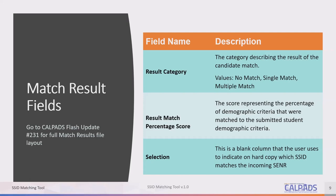The selection field is a blank column for users to indicate whether or not they are selecting that candidate. You can put any value in this field when doing manual matching — it may be simplest to put the SSID of the matching student in that field, or use it as a yes/no indicator. That field is there for future enhancements in which vendors will allow matching within local information systems. Right now, you can expect to do manual matches and use that selection field for your own indications.